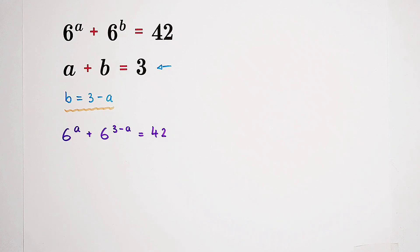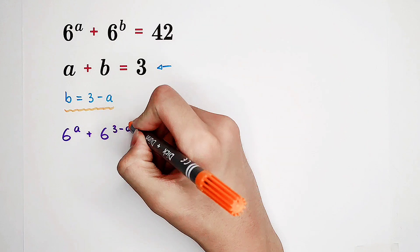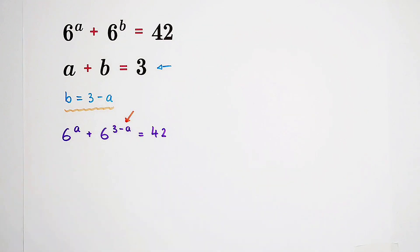Now, I'm unhappy. Why? Because you see, here is a minus A. And on the exponent, I don't like it. So now, what I'm going to do is to multiply 6 to the power of A on both sides.